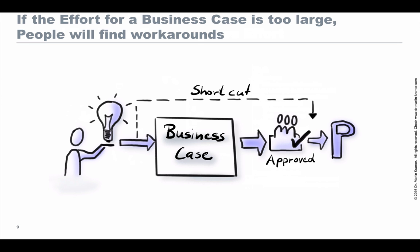If the effort for a business case is too large, people will find workarounds. A colleague with a project idea, faced with a high-hurdle approval process, will look for shortcuts. Often people find supporters and promoters so that not every project actually gets a business case — some projects are started because people find clever shortcuts around the usual approval cycle.